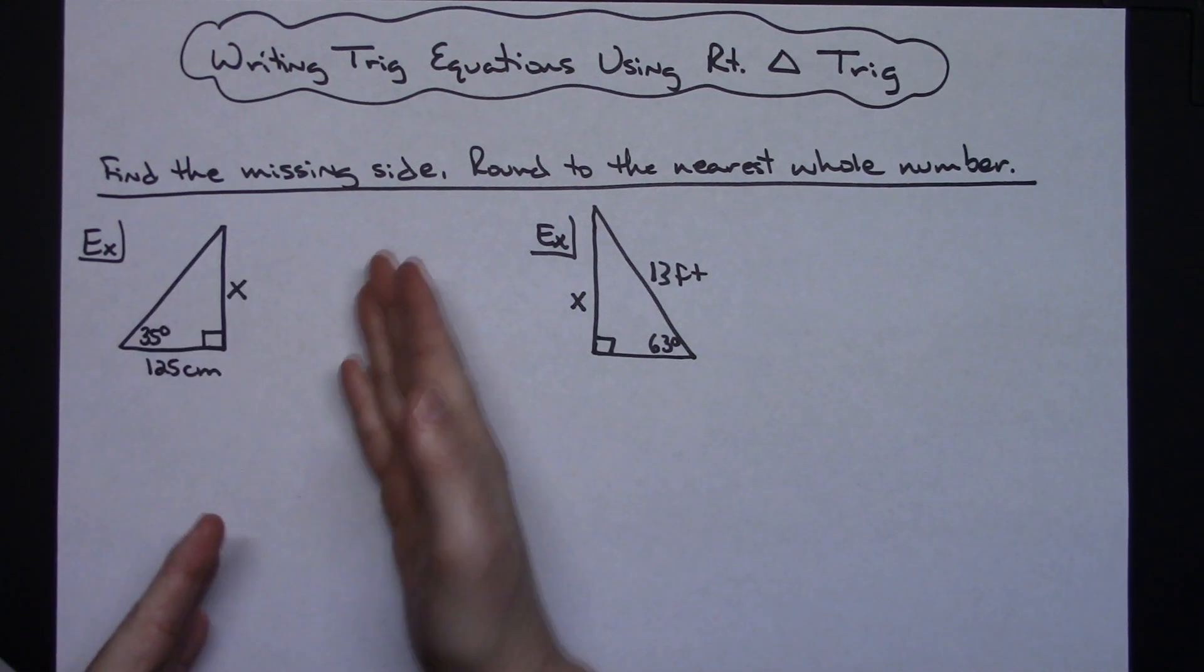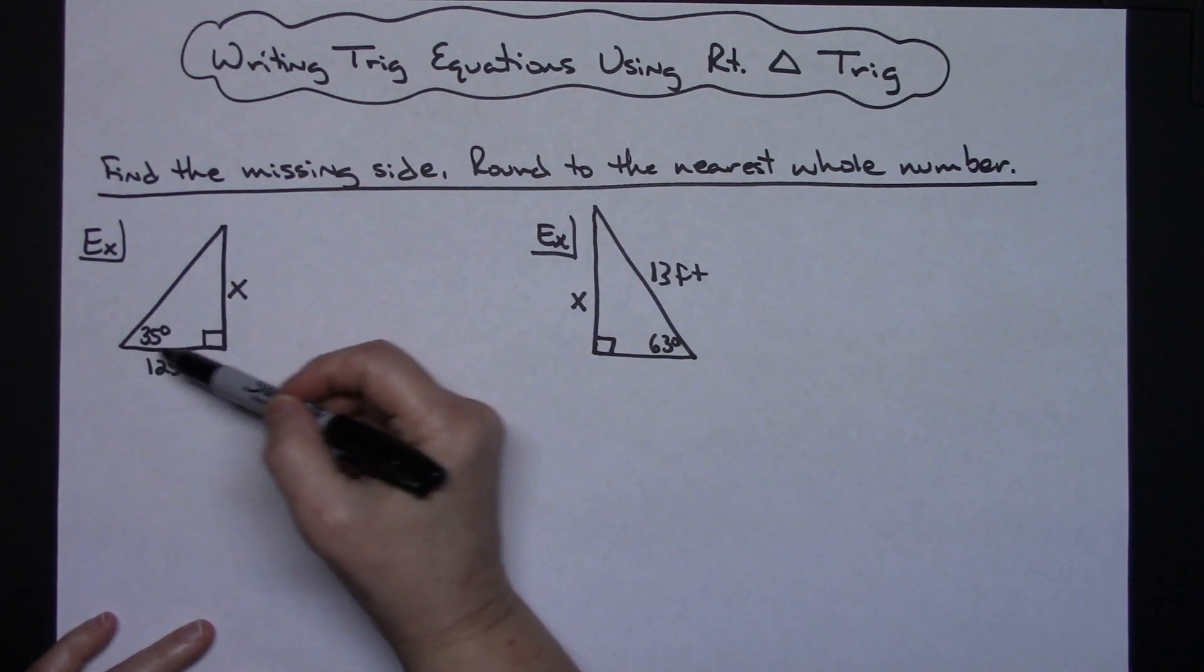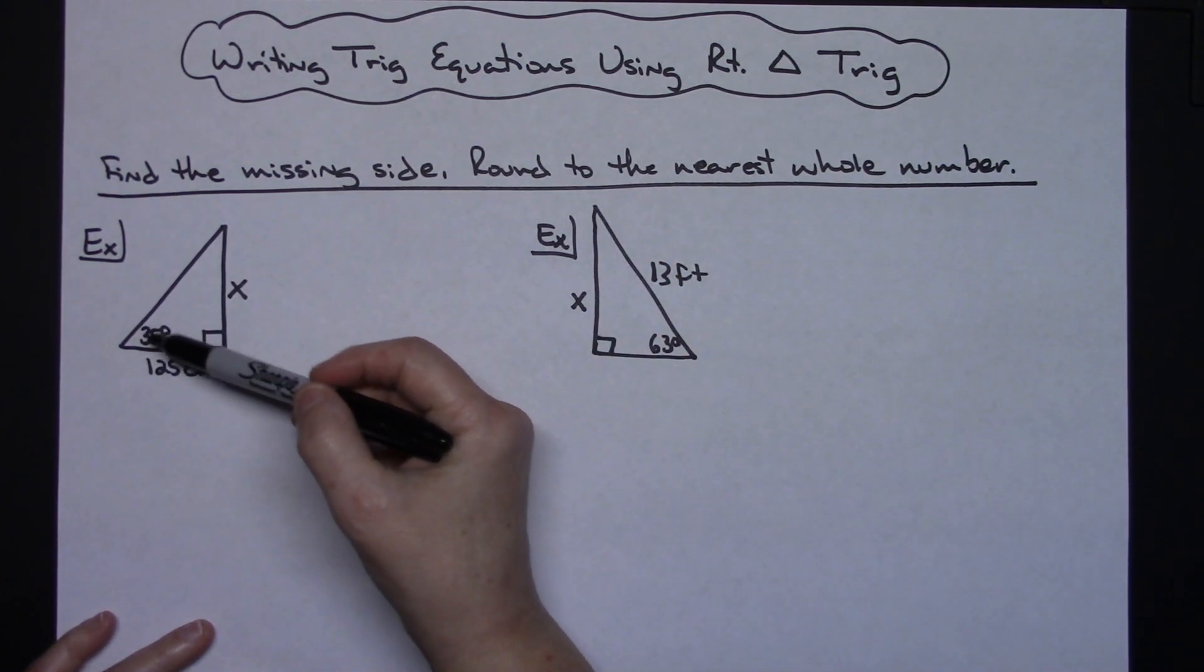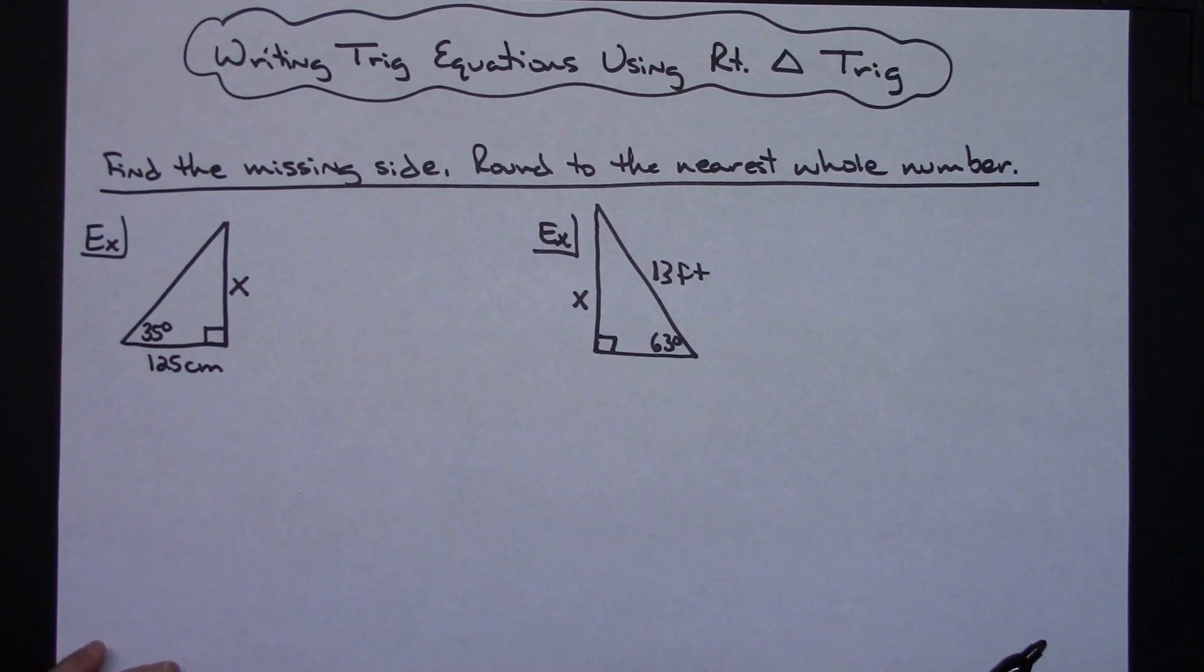The directions say find the missing side, round to the nearest whole number. You're given a right triangle with one side, one angle, and you're trying to find a missing side. This involves right triangle trig, so you need to know things like tangent is opposite over adjacent and sine is opposite over hypotenuse. You have to have those right triangle definitions memorized.